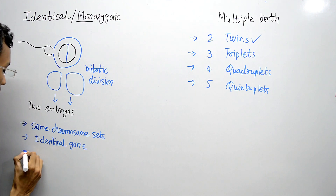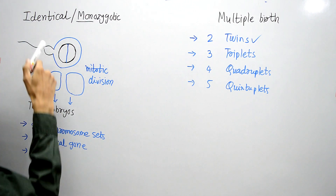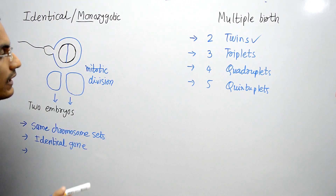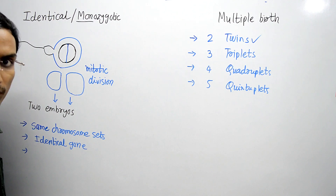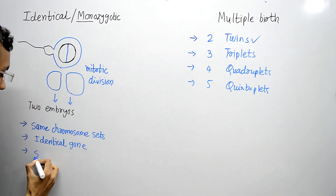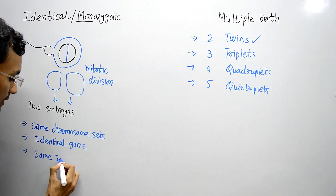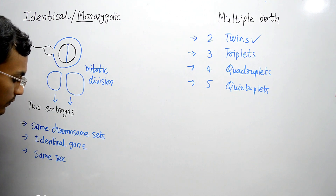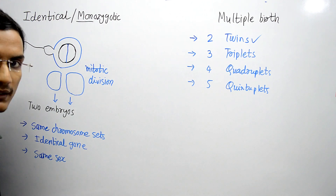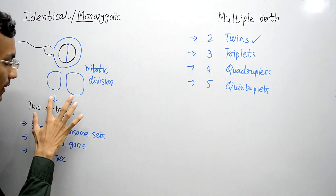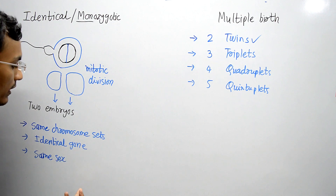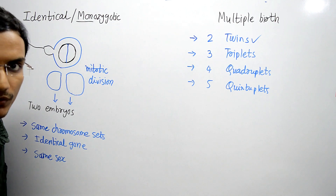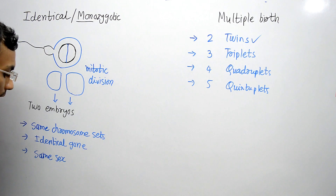One more interesting thing about identical or monozygotic twins is that they are of the same sex. So if male twins are there, both embryos are of male sex, and if female, both individuals are female. They are always of the same sex.